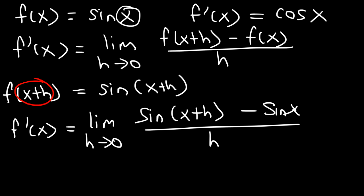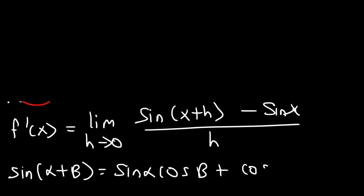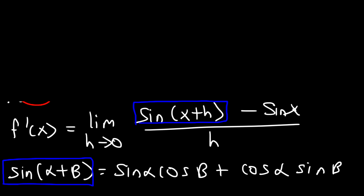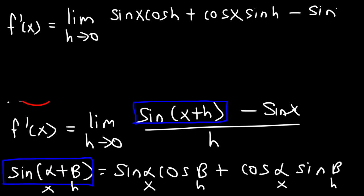So f prime of x equals the limit as h approaches 0 of sine of x plus h minus sine x, divided by h. To simplify this, we use the sum formula for sine: sine of alpha plus beta equals sine alpha cosine beta plus cosine alpha sine beta. Replacing alpha with x and beta with h, we get sine x cosine h plus cosine x sine h, in the numerator.